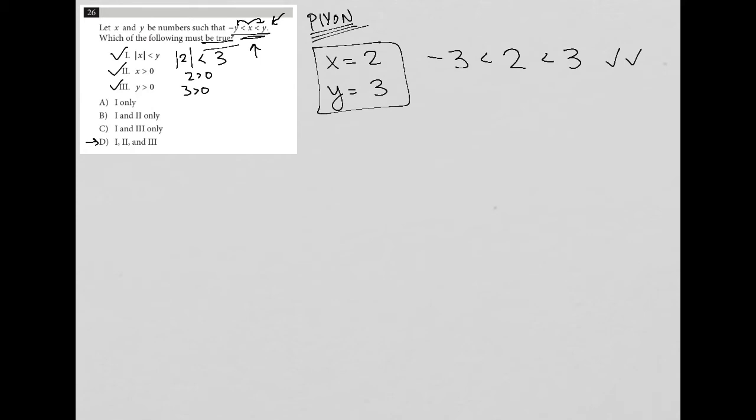So that would lead me to think that D is the right answer because all three of those work. However, anytime I use plug in your own number, I like to mix it up just a little bit, like to try at least two sets of numbers. So it does work in this case. But what if I had said X is negative two? Is there something I can make Y that would make this work? If I said Y is even, I mean, I can keep Y as three, but let's make it something different. Just for example, let's make it five. So that would still be true that negative five, negative Y is less than negative two. That's true. And it's less than positive five. That's also true.